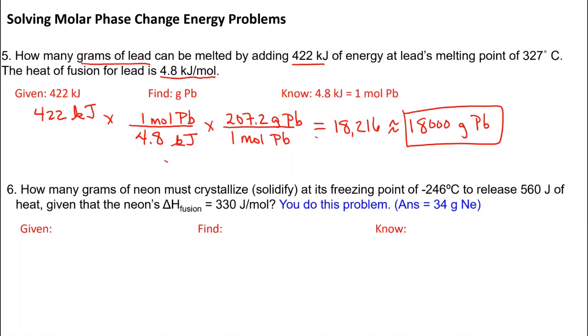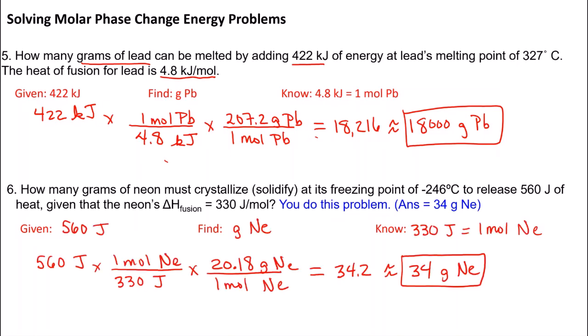It's your turn to do the next one. How many grams of neon must crystallize at its freezing point of minus 246 degrees Celsius to release 560 joules of heat, given that neon's delta H of fusion is 330 joules per mole? If you get 34 grams of neon, you did it right. Pause and try the problem yourself. If you did not get 34 grams, pause the video and look at the work to figure out where you went wrong.